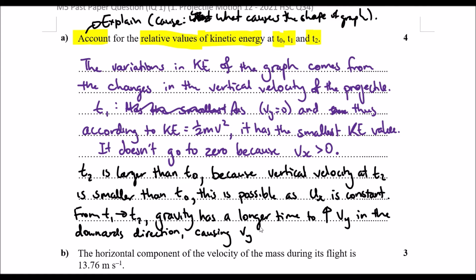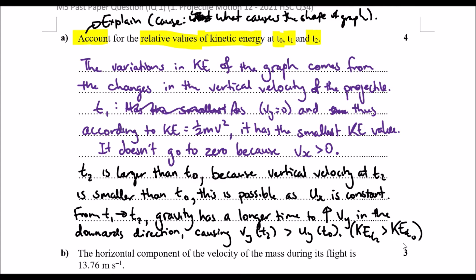This causes vy at t2 to be larger than uy at t0, explaining and accounting for why we see those relative KE values. That's why the kinetic energy at t2 is larger than the kinetic energy at t0.